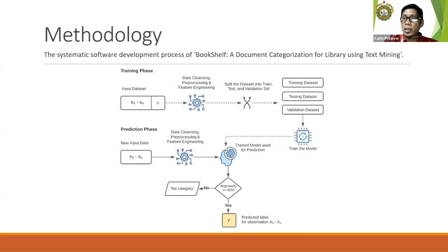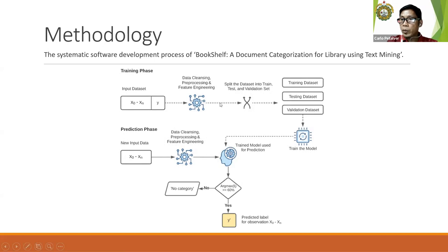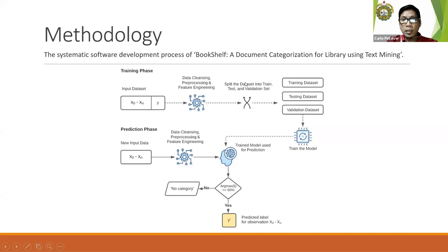Here is the methodology — the systematic software development process of Bookshelf. The system involves a training phase and a prediction phase. For the training phase, a dataset of extracted text from the books' table of contents and index pages was collected using OCR technology and saved to the database as separate samples. This undergoes a preprocessing stage including data cleansing and feature engineering techniques, then the data is split into train, test, and validation sets to create a model for prediction.